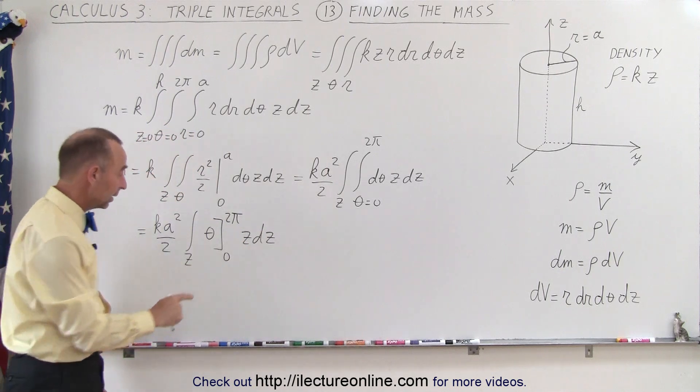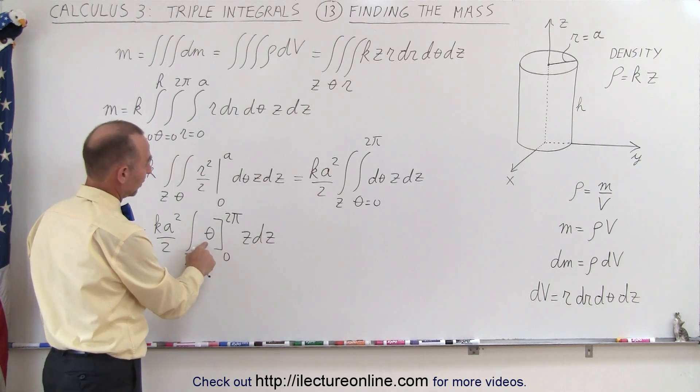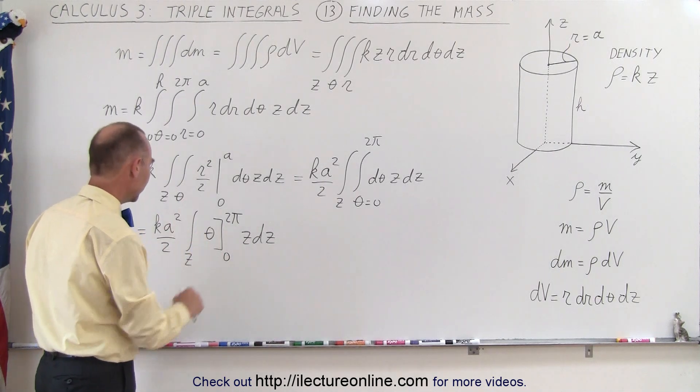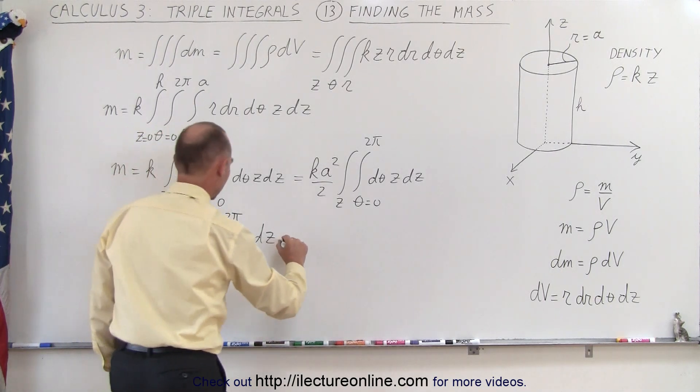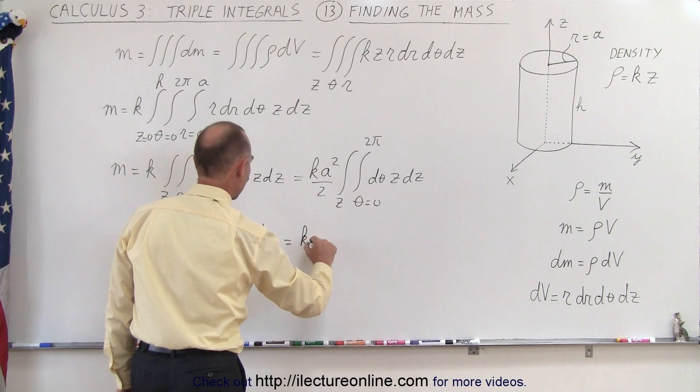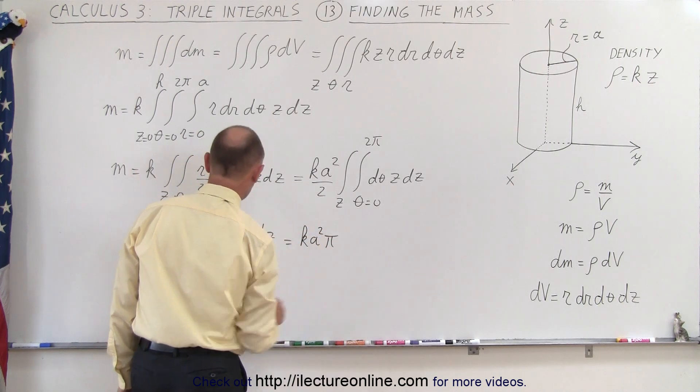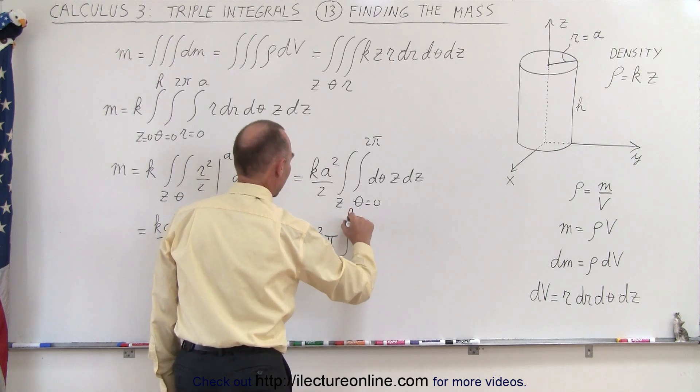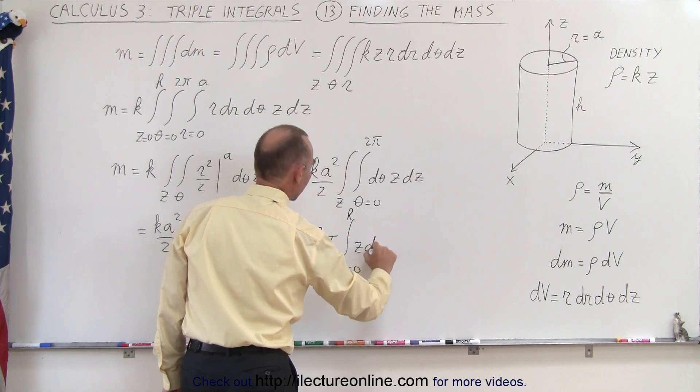When plugging the limits of integration, you plug in 0 you get nothing, plug in 2π you get the constant 2π which can go to the front. The 2s will cancel, so this becomes equal to k a squared π times the integral from z equals 0 to h of z dz.